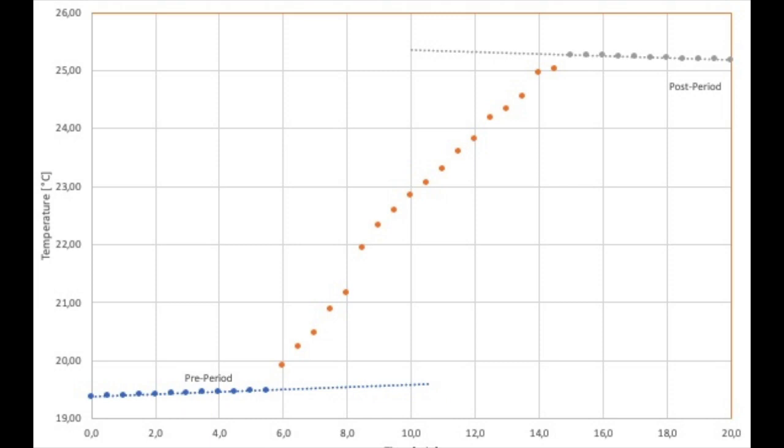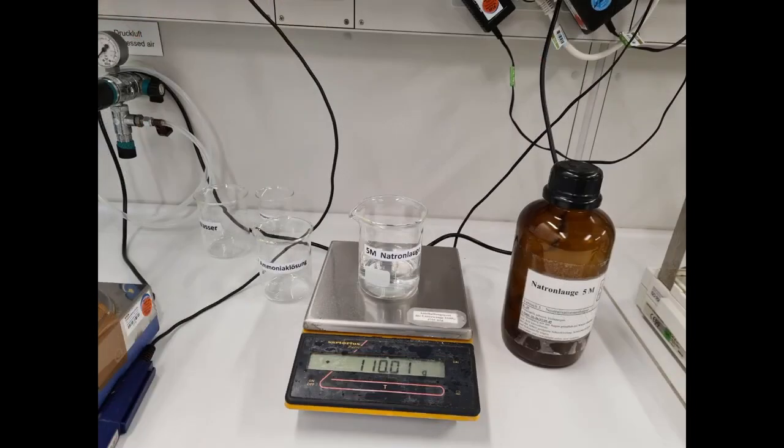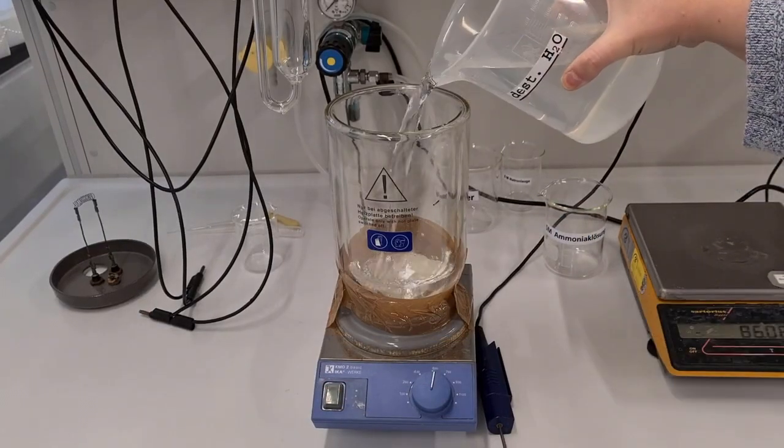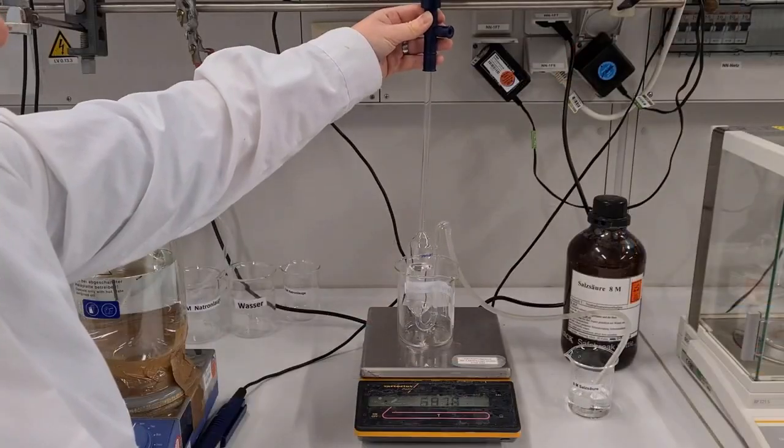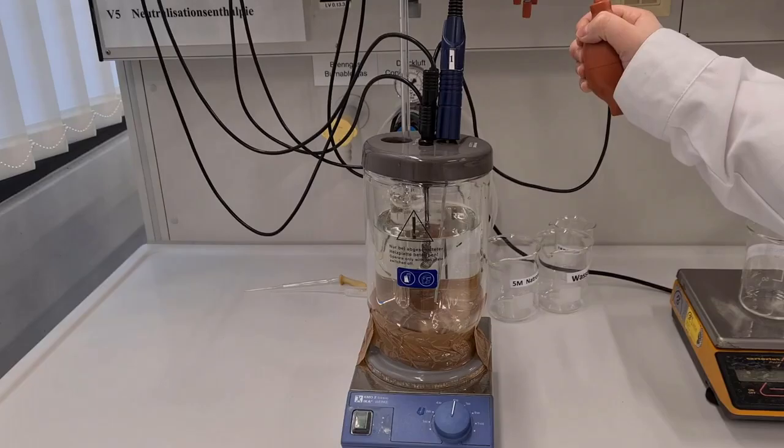To determine the enthalpy of neutralization of sodium hydroxide with hydrochloric acid, 680 grams of water are mixed with 110 grams of 5 molar sodium hydroxide solution. A pipette filled with 60 grams of 8 molar hydrochloric acid is placed in the dual flask, so that the pipette tip is located above the surface of the hydroxide solution.